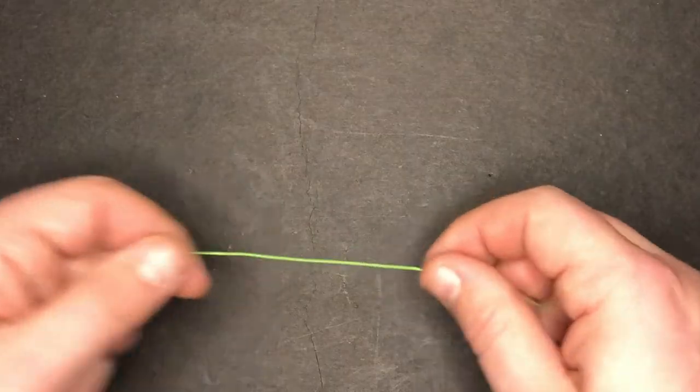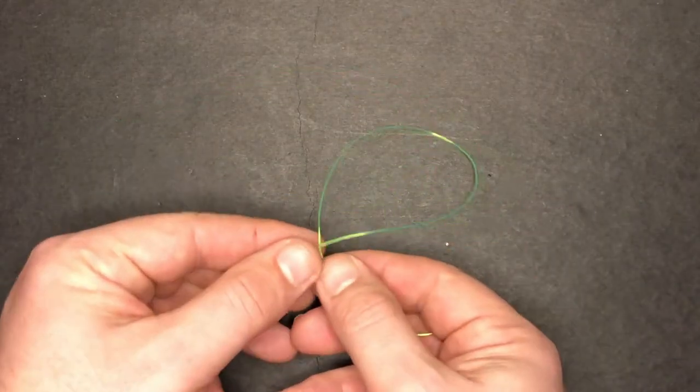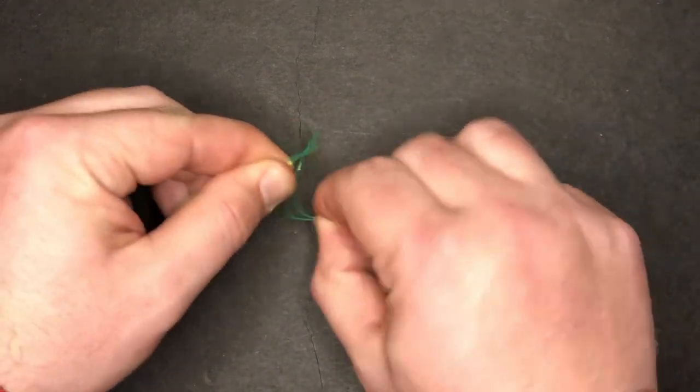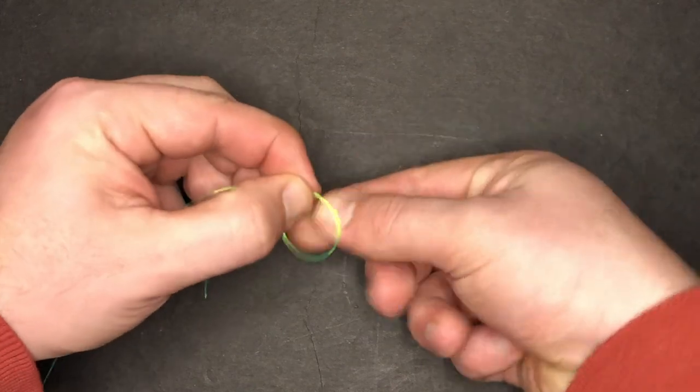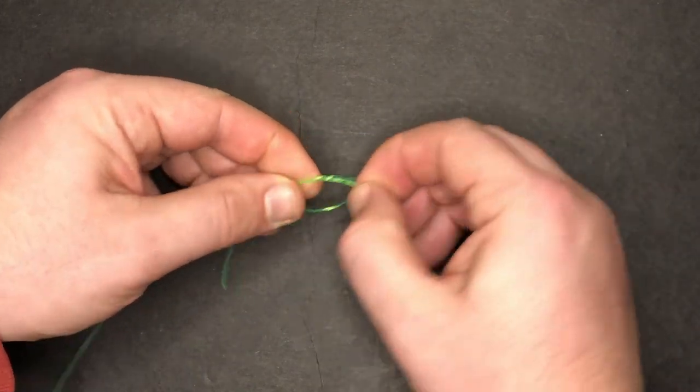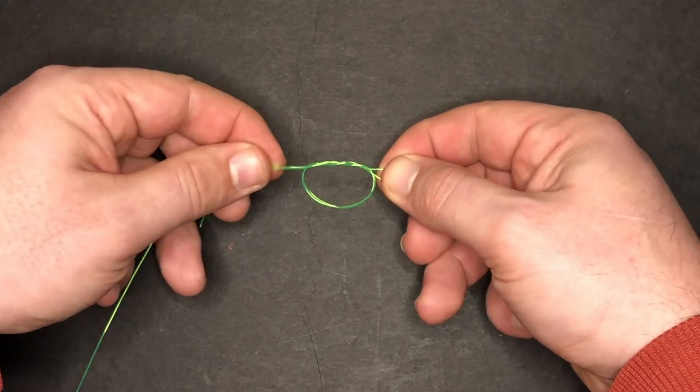Now that I have both of my dropper loops, I'm going to move to the end of the leader where I'm going to tie my sinker. Here I'm going to tie a surgeon's loop, and to do that, I'm going to double over my line, cross the doubled over line to create a loop. Now on my right hand, I have the looped tag end. I'm going to thread that through this loop twice. I'm going to wet the knot with some spit.